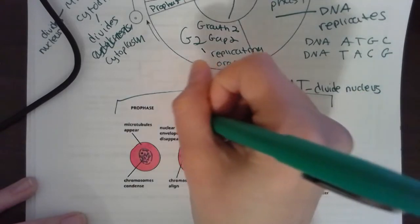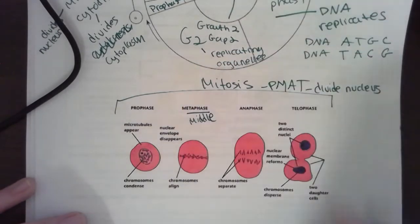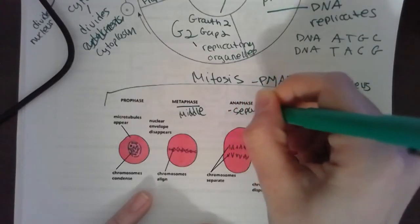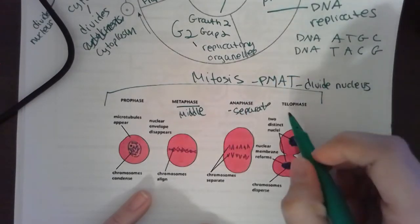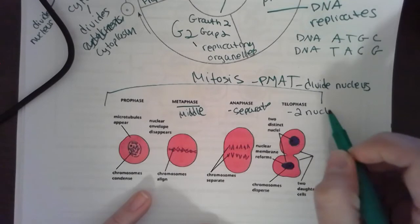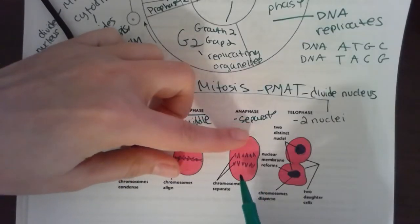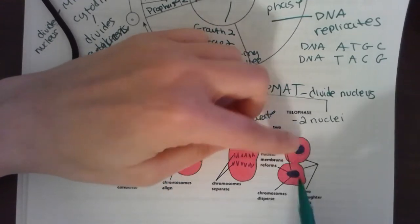Metaphase is when chromosomes are in the middle. And then anaphase is when my chromosomes separate onto opposite ends of the cell. Telophase is now when I see two distinct nuclei. So when these chromosomes separate to opposite ends, basically in telophase my nucleus surrounds each of these.